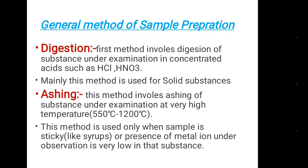The second method is ashing. This method involves ashing of the substance under examination at very high temperatures, ranging from 550°C to 1200°C. This method is used only when the sample is sticky, like syrups, or when the presence of the metal ion under observation is very low in that substance.